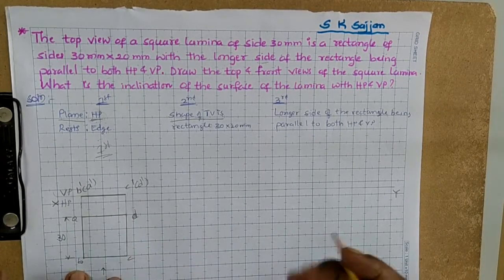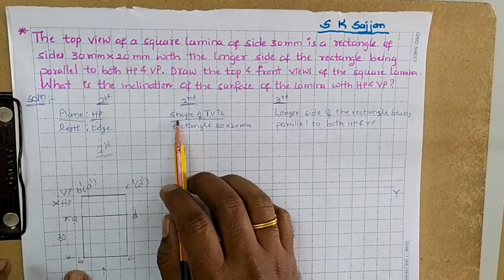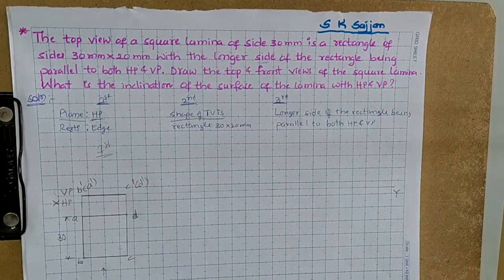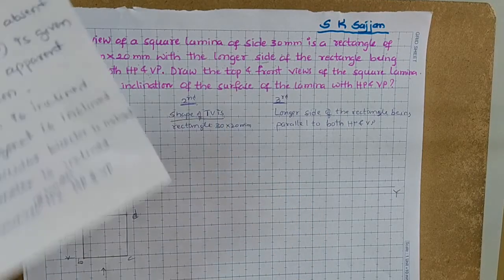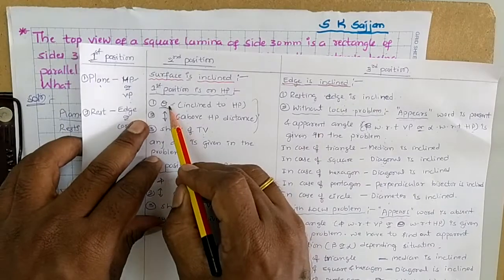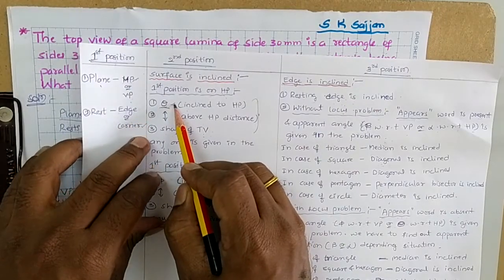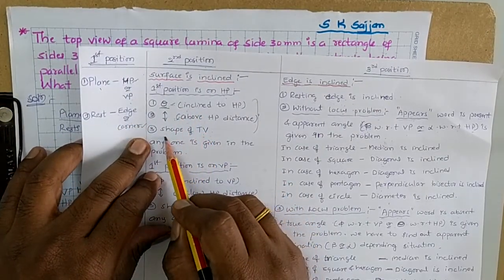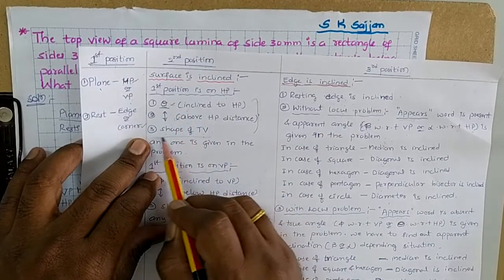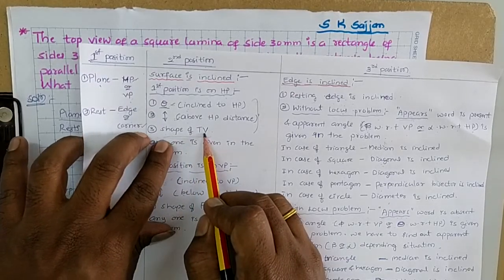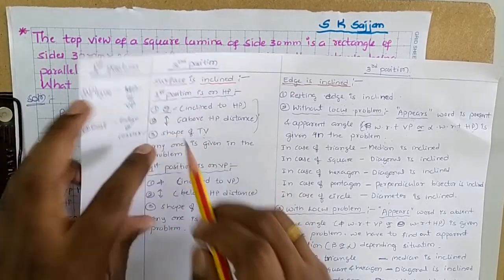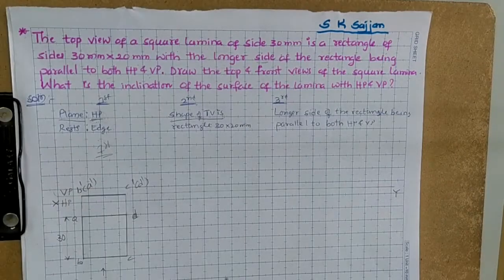Now come to the second portion. What is given for the second portion? Theta is not given; the above distance is not given. What is given is the shape of the top view. When the shape of the top view is given, we need to find out how much theta is. First, we need to draw the top view.